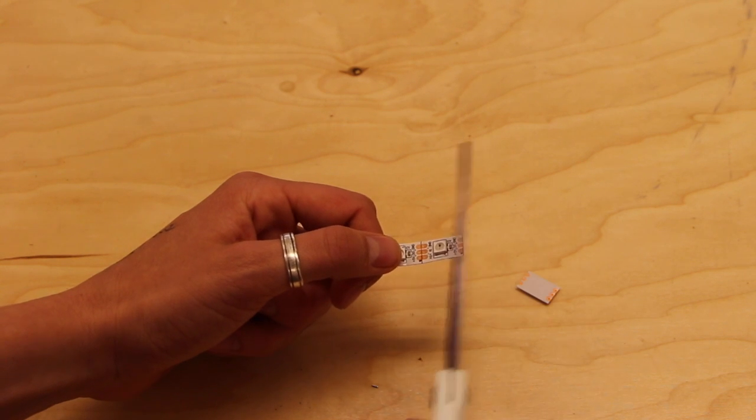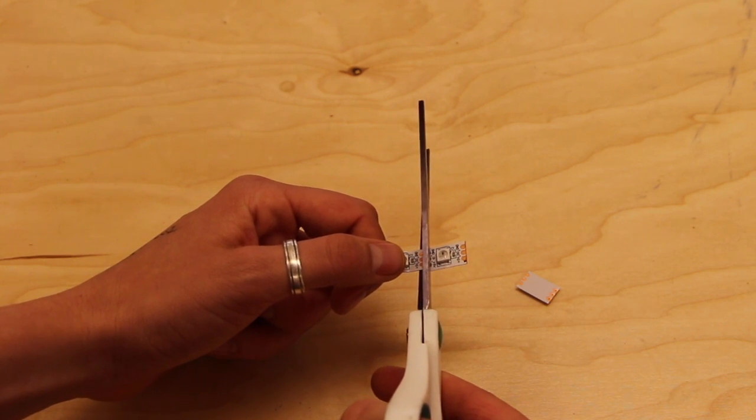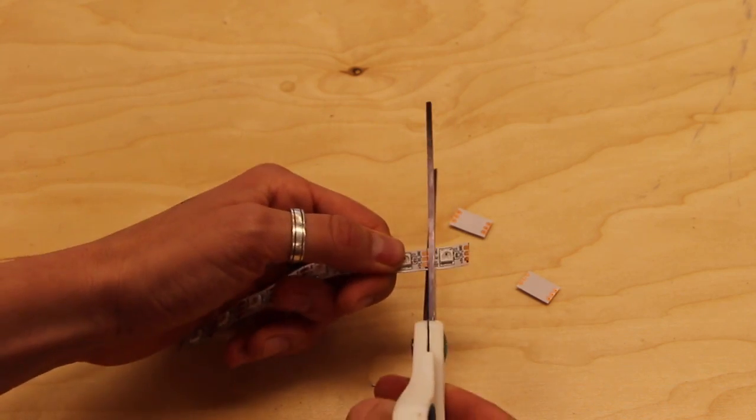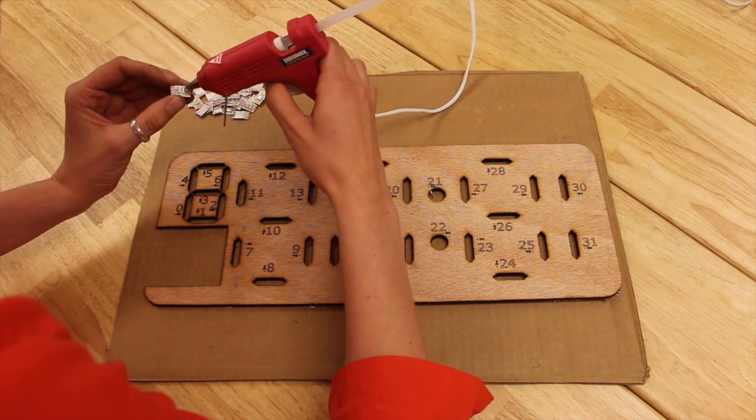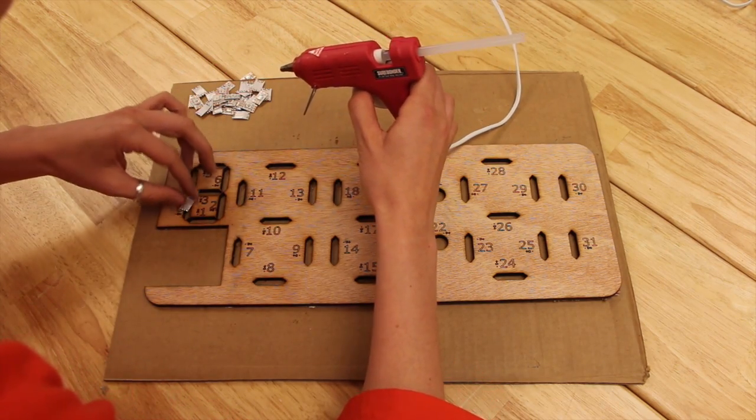The next step is to assemble the neopixels. Cut the neopixel strip apart. There should be one pixel per hole for a total of 32 neopixels. Tin the copper pads to make soldering easier. Use the neopixel positioning layer to hot glue neopixels in place.